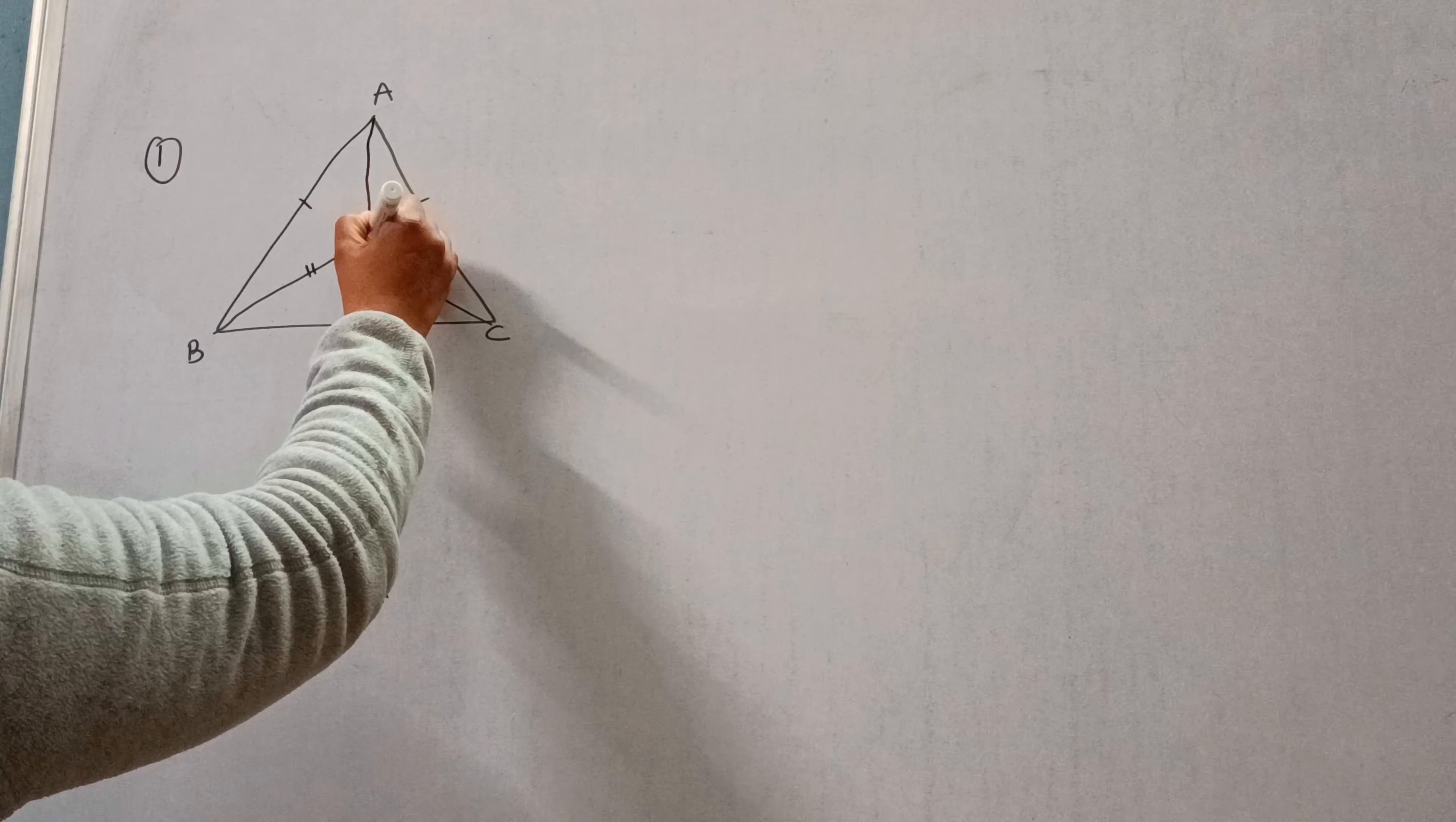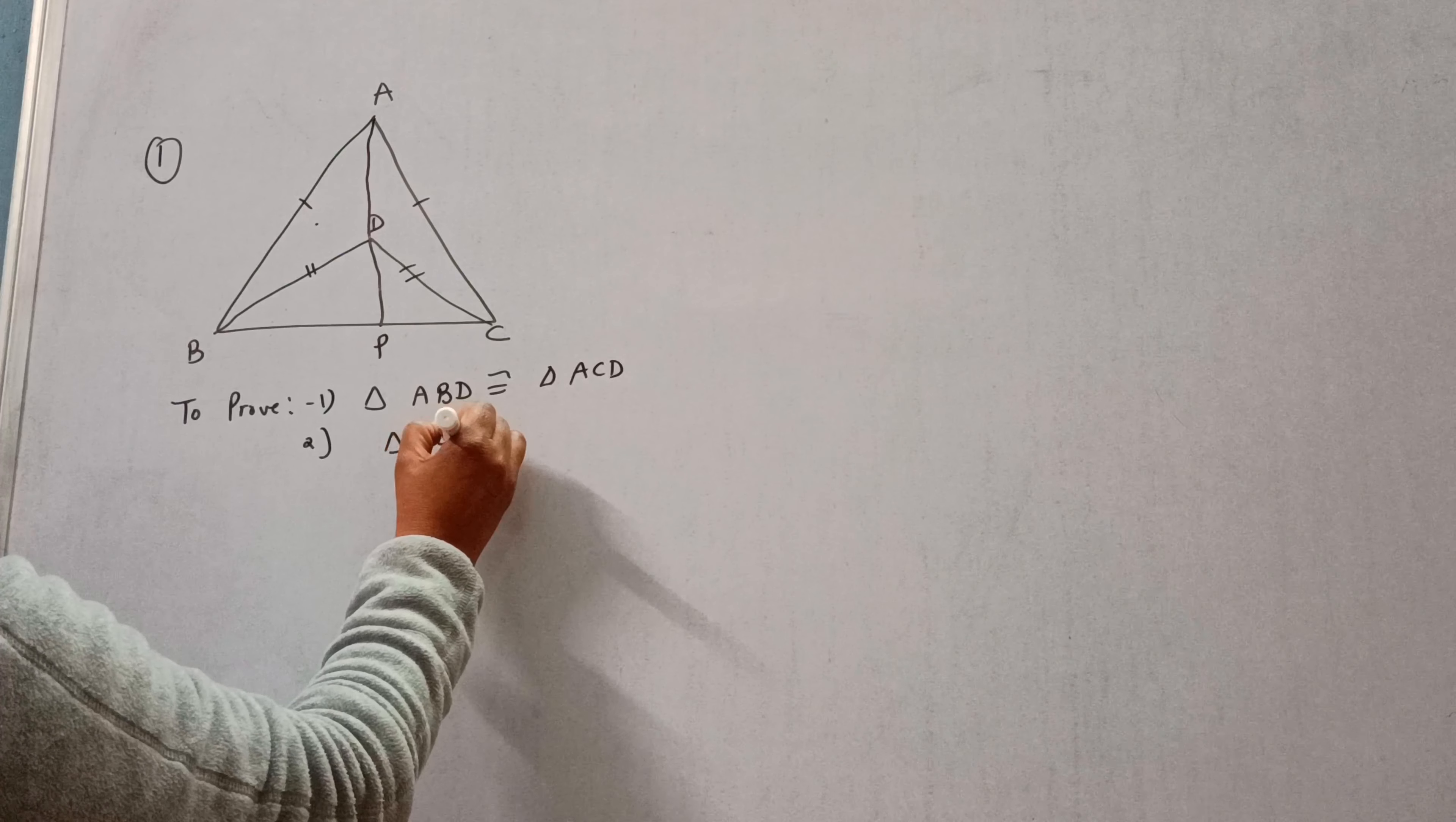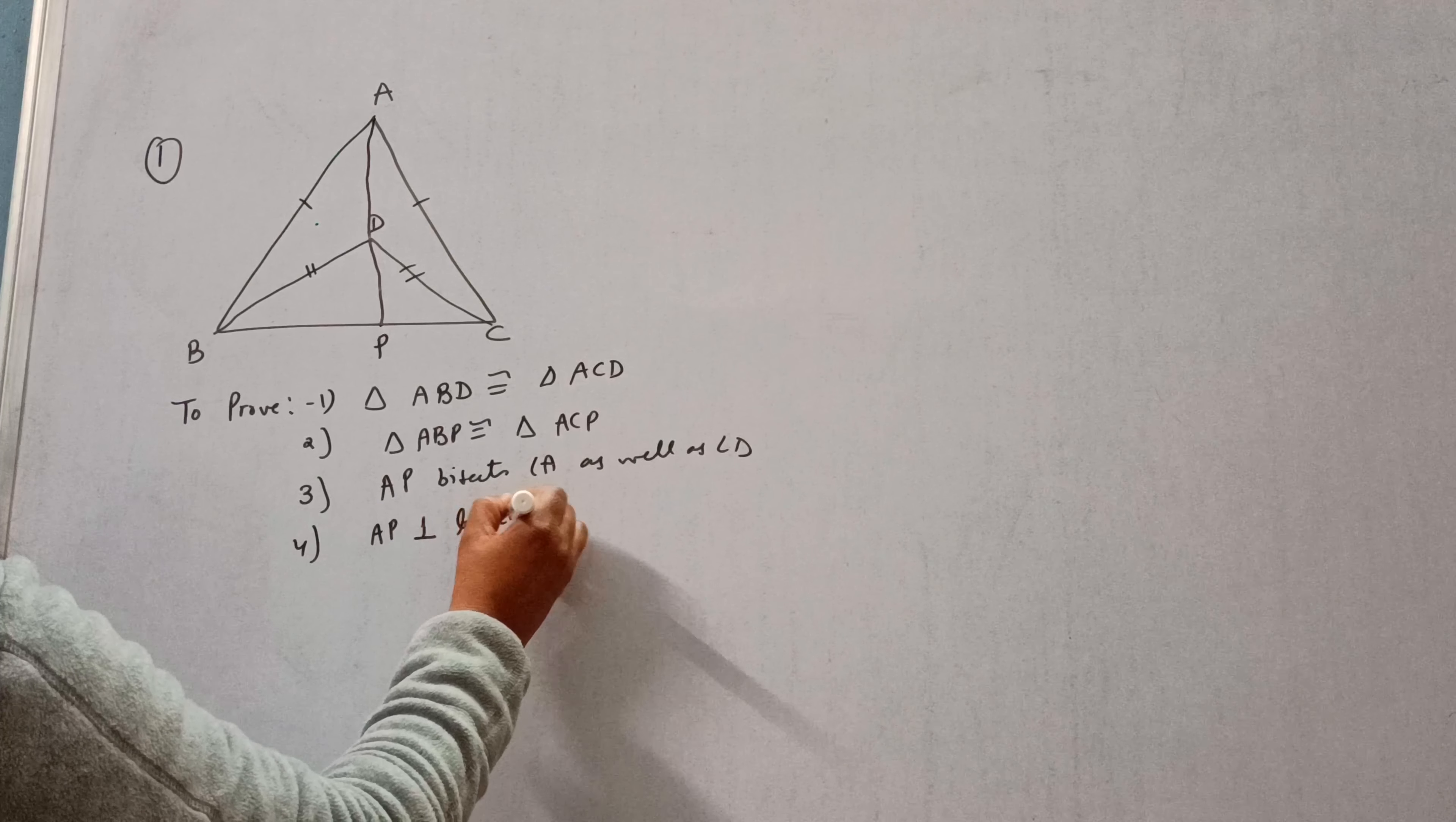First, triangle ABD is congruent to triangle ACD. Second, triangle ABP congruent to triangle ACP. Third, AP bisects angle A as well as angle D. And fourth, AP is perpendicular bisector of BC. These four things we have to prove.